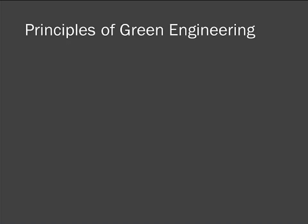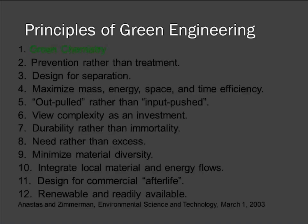I'm going to spend a few minutes on the principles of green engineering. These are analogous to the principles of green chemistry — some guidelines and a framework to achieve the goal of designing more sustainable products and processes. The first principle of green engineering is essentially green chemistry: we want to start with the most benign materials, chemicals, and energy sources that we can, and from that molecular basis think about how to put these together into products, processes, and systems.